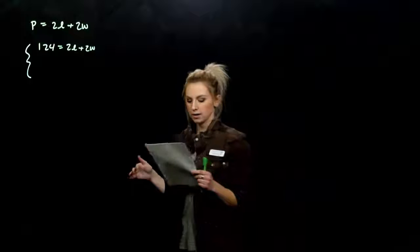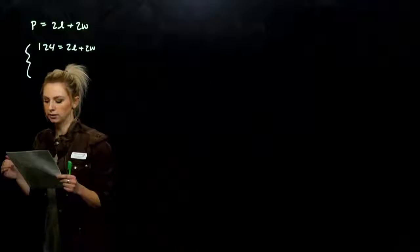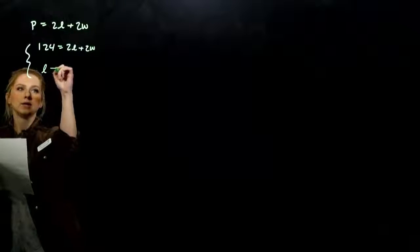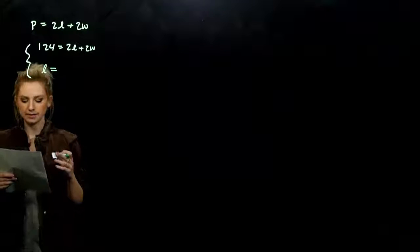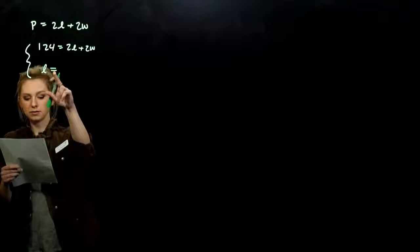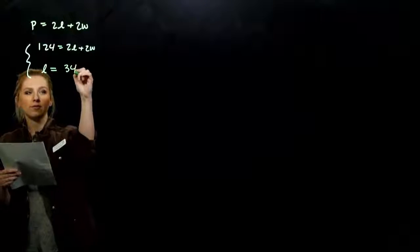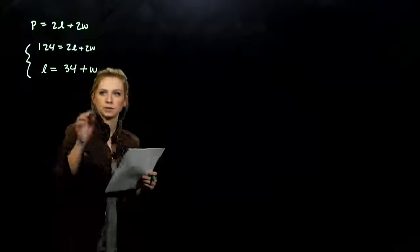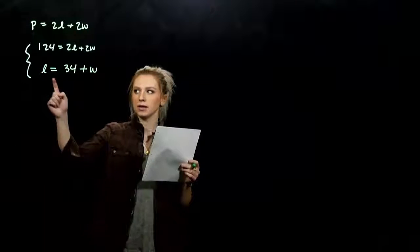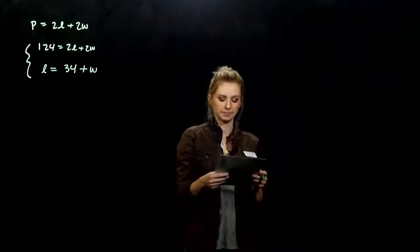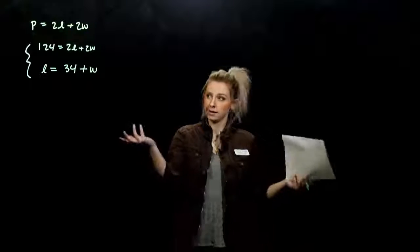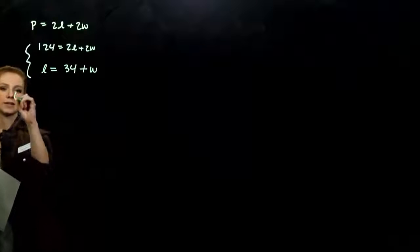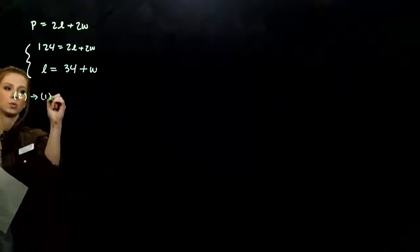The length is 34 feet more than the width. So I know that L is equal to, just parsing down the sentence, the length is 34 feet more than the width. So the width plus another 34 feet gives us the length. Now can we solve? Yes, using that substitution method. What do we want to do? L is already isolated, so let's sub 2 into 1.